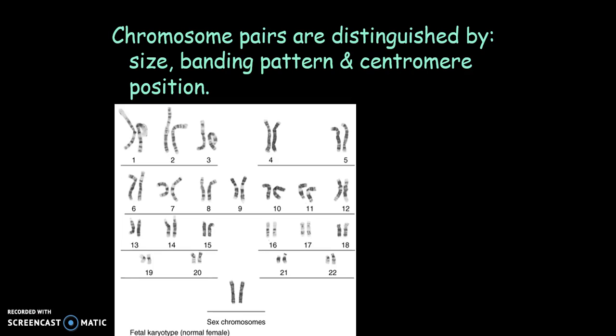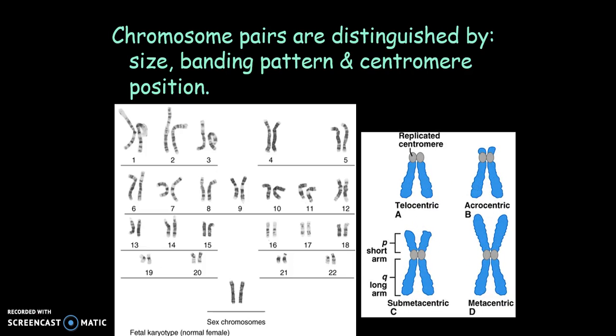Homologous pairs are the ones that are the same size and the same length, and they do contain the same genetic material. So what we're showing here is a karyotype. A karyotype is a chart of the metaphase chromosomes, or the homologous pairs of a cell, that are arranged by size and centromere position.